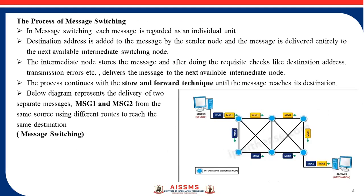For example, in the diagram of message switching, the sender or source wants to send data to the destination. The message 1 is received by a node which we call a switch. The switch will receive this message and first check the available paths. Until the path is available or free, the message will be stored in switch 1. Once the path is free, the message will be processed. That's why it is called the store and forward technique.